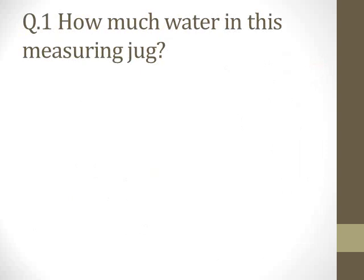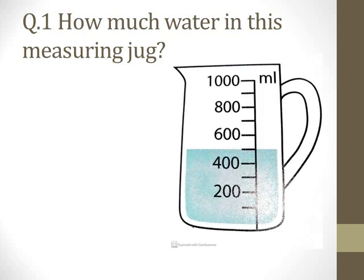Question number one is asking: how much water is in this measuring jug? You are going to have a picture on your screen — this is exactly the picture of the measuring jug. First you check the unit: the measuring jug unit is milliliter (ml), and there are numbers from 200 to 1000.